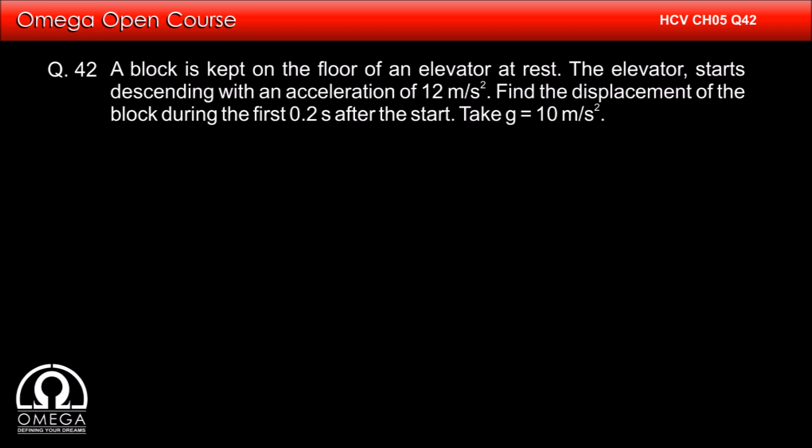The elevator is moving with an acceleration greater than the acceleration due to gravity. If on a body there is no force other than gravity in the vertically downward direction, then its maximum possible acceleration is g. Since on the block there is no force other than gravity in the vertically downward direction, it will move downward with an acceleration g.